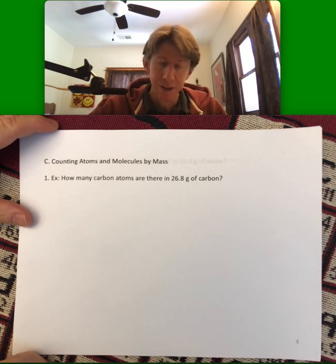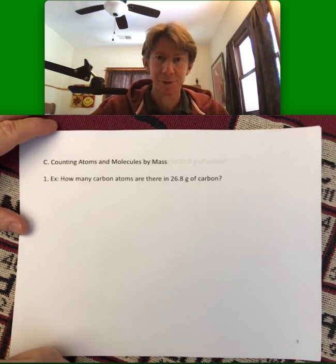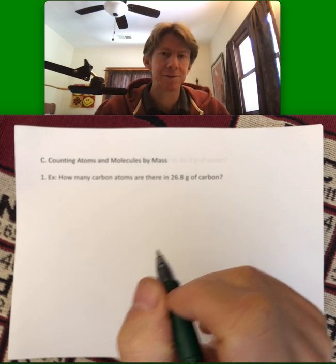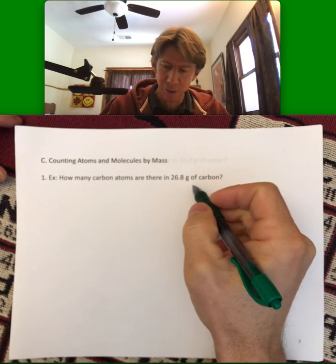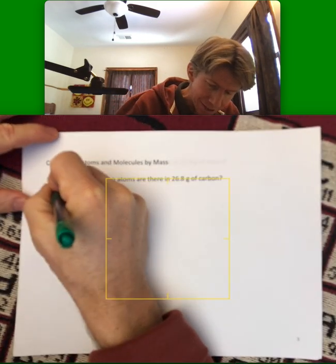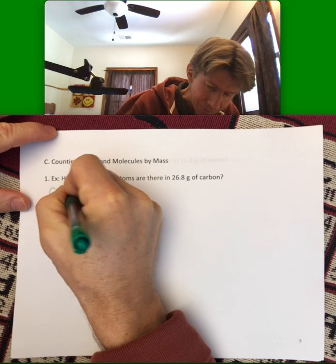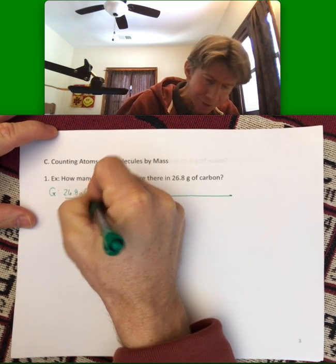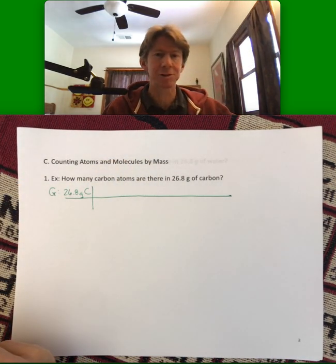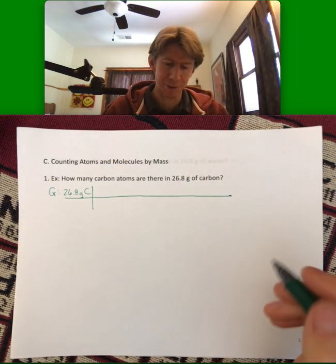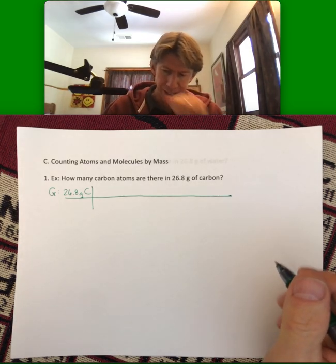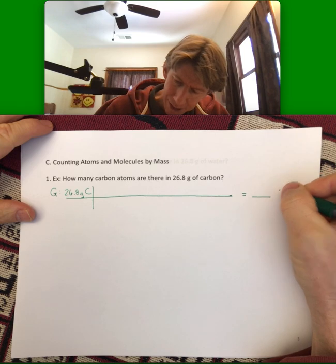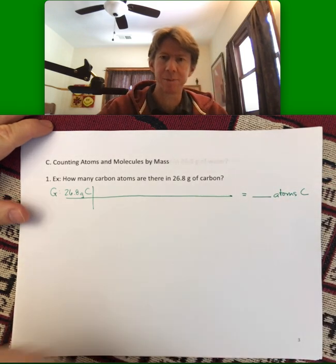Now this problem is going to start to use a couple of conversion factors. Let's start by taking the 26.8 grams of carbon. That's going to be our given. I don't know how many unit conversion factors there are going to be, but let's assume there's going to be just a couple and we'll make some space for them. Our answer over here is going to be blank atoms of carbon.